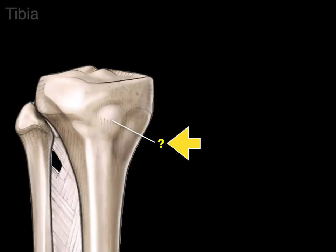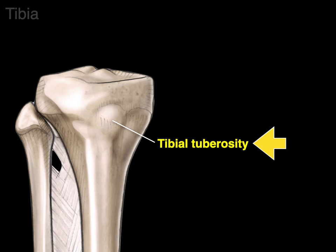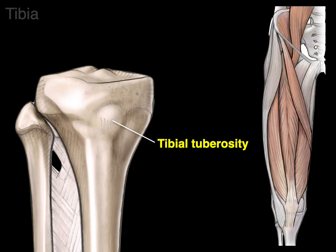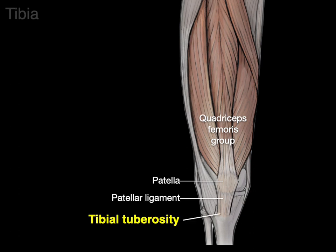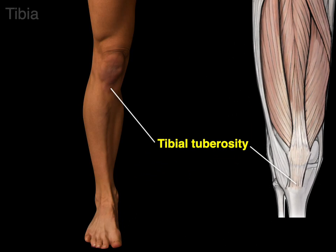On the proximal anterior portion of the tibia is a bony swelling — we use the word tuberosity. Since it's on the tibia, this is the tibial tuberosity, which serves as a landmark for muscle attachment for the quadriceps femoris muscle group. The quadriceps envelop the patella and the connective tissue tendon-slash-ligament continues on to attach to the tibial tuberosity. In surface anatomy, there's the tibial tuberosity just below the patella.